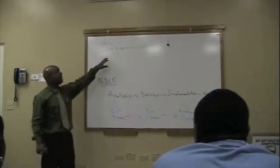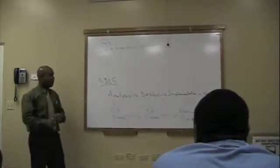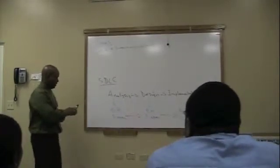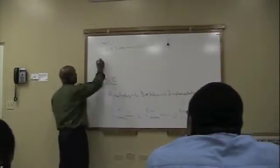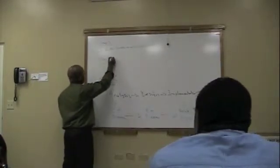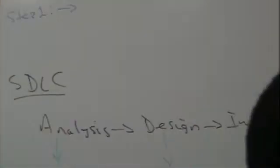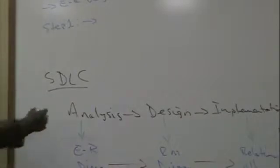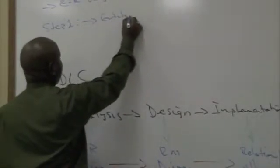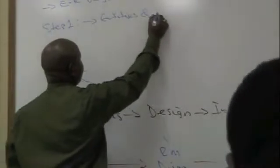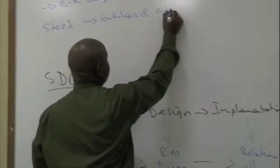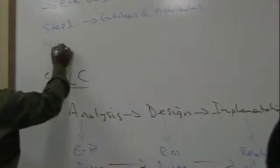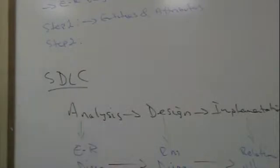The first step in creating the ER diagram, the simplified ER diagram. Now, before we do this, let's have a look at the first two steps. Step one was what? This is entities. Entities and attributes. And step two. You just completed that?